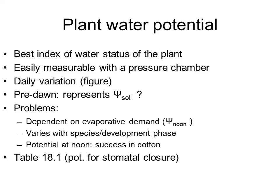Problems with using plant water potential: first and very importantly, it depends on the evaporative demand — the more evaporative demand, the lower the water potential. It is also dependent on the species and the development phase, so it is very difficult to establish general rules about what plant water potential indicates that we need irrigation. It changes with the species and through the growth cycle.